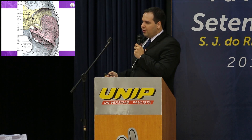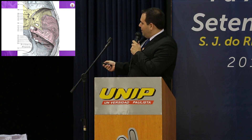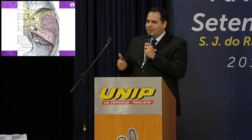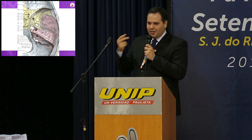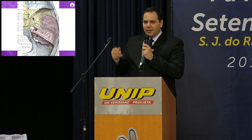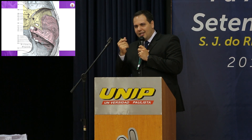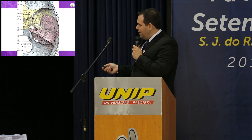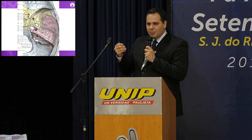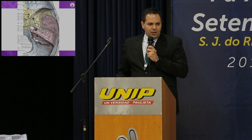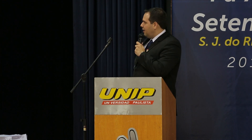Forame lacerado, por onde passa a artéria. Forame rasgado posterior, por onde passa o nervo glossofaríngeo, vago e acessório. E também o seio sigmoide, responsável pela drenagem de todo o crânio. Imagine essa região fechada, com pressão nervosa, diminuição da drenagem cerebral e comprometimentos gerais nesse crânio.